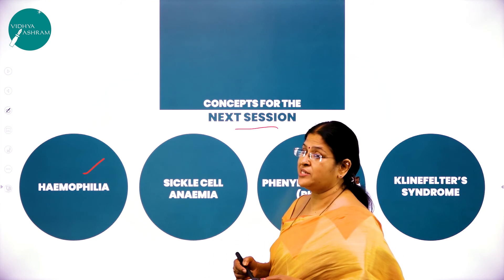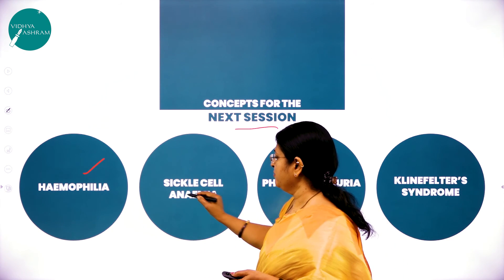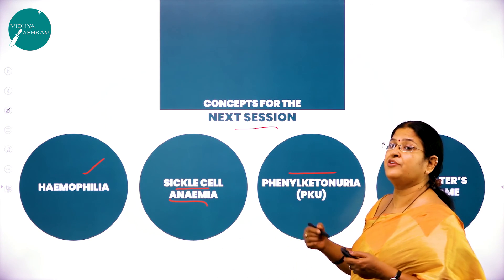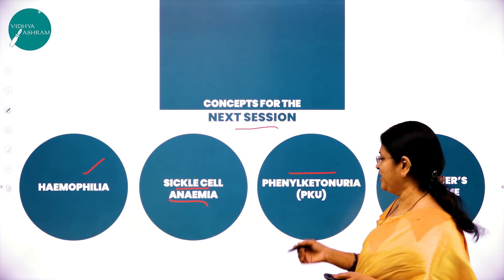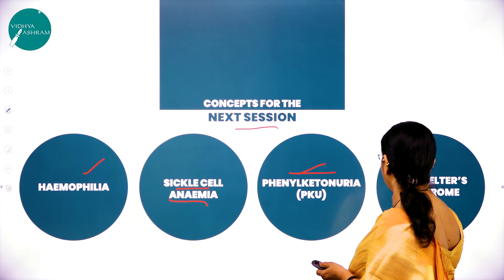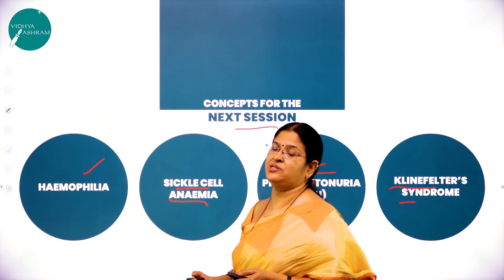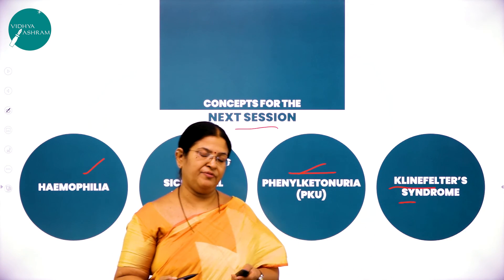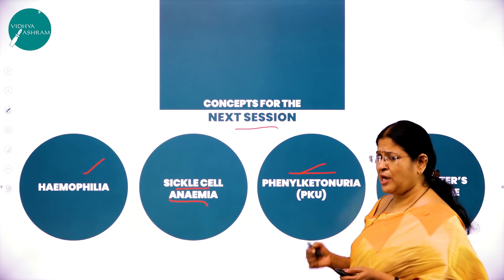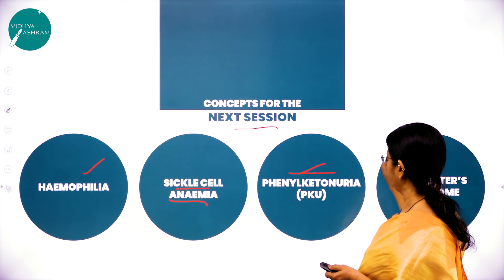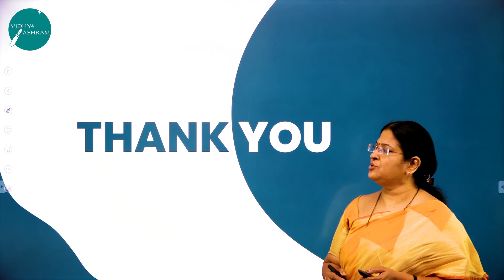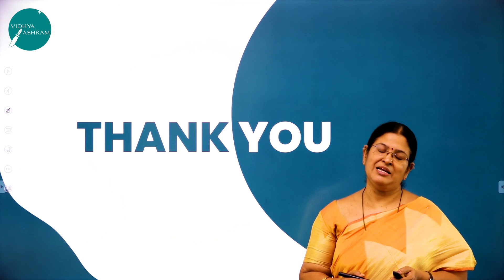Hemophilia is also called royal disease and bleeder's disease. We will also study the cause of sickle cell anemia, phenylketonuria (also called PKU), and chromosomal disorders with examples like Turner syndrome, Klinefelter syndrome, and Down syndrome. Thank you and goodbye.